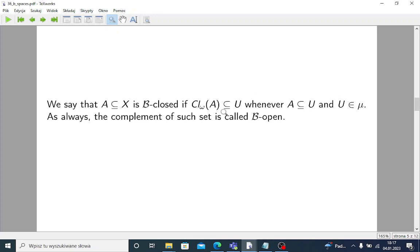So, for any μ-open set U such that A is contained in U, omega closure of A is contained in U too. As always, the complement of such set is called B-open.